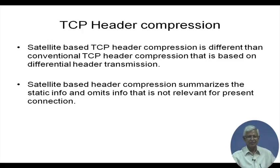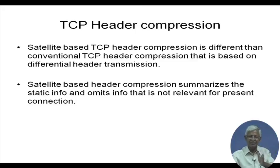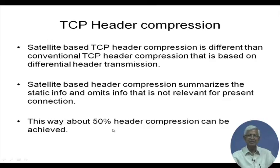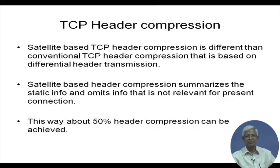Source and destination port addresses are long in terms of bits, so unique shorter identifiers are used for each segment as long as the connection is active. Similarly, TCP flags that are not used can be omitted. By reducing static information that does not change dynamically during the connection, roughly 50% header compression can be achieved. This approach, slightly different from IETF standard header compression, has been accepted by CCSDS.